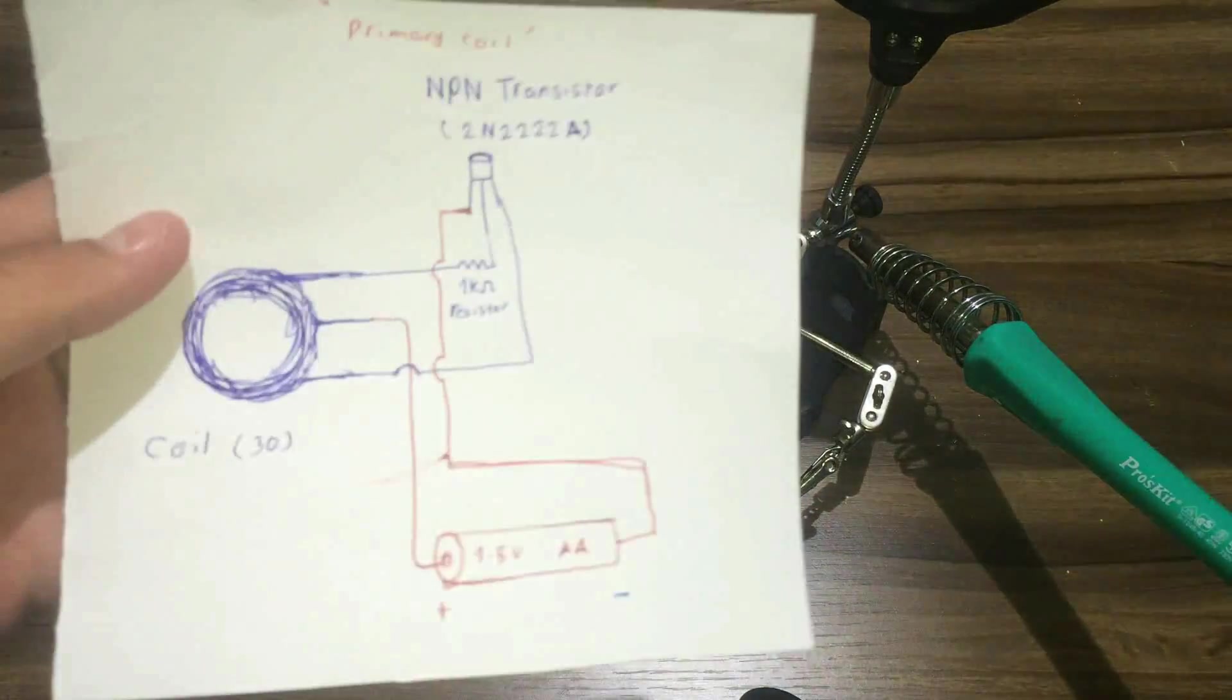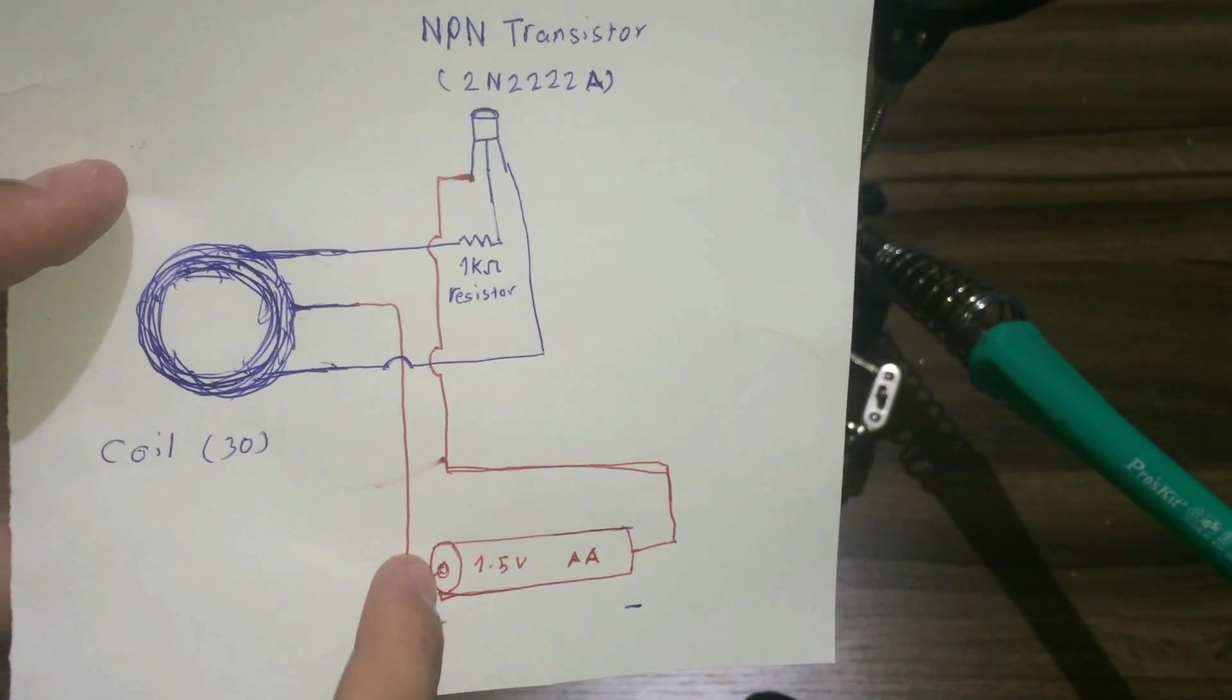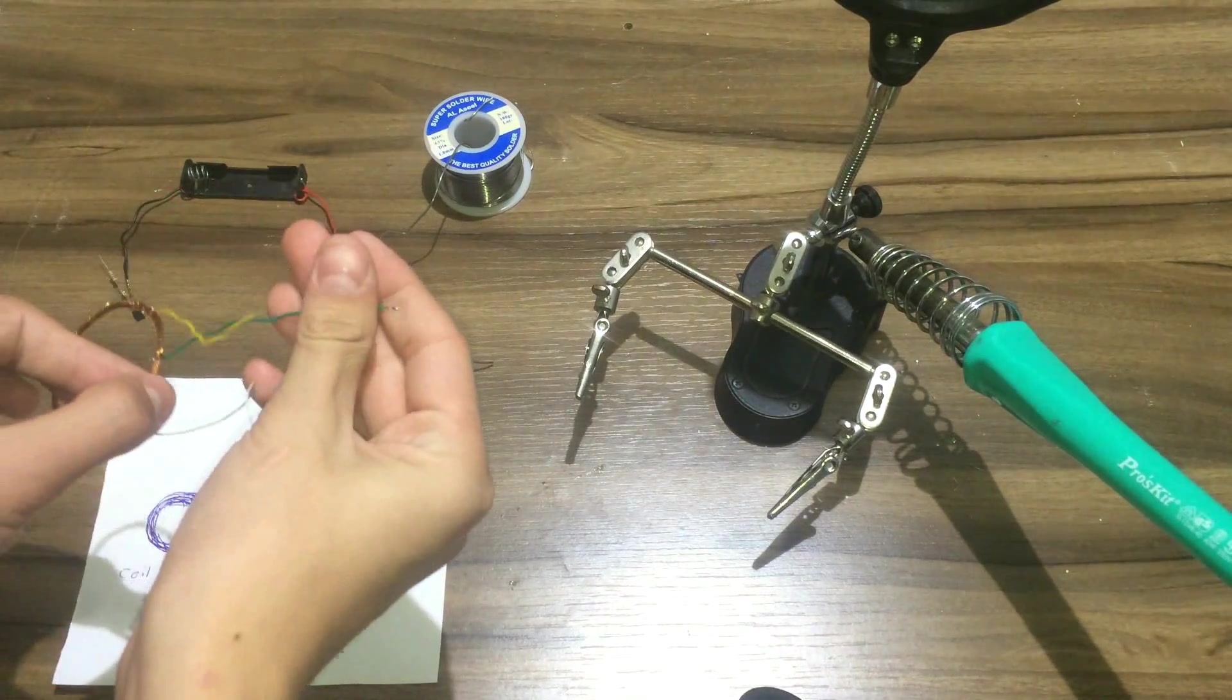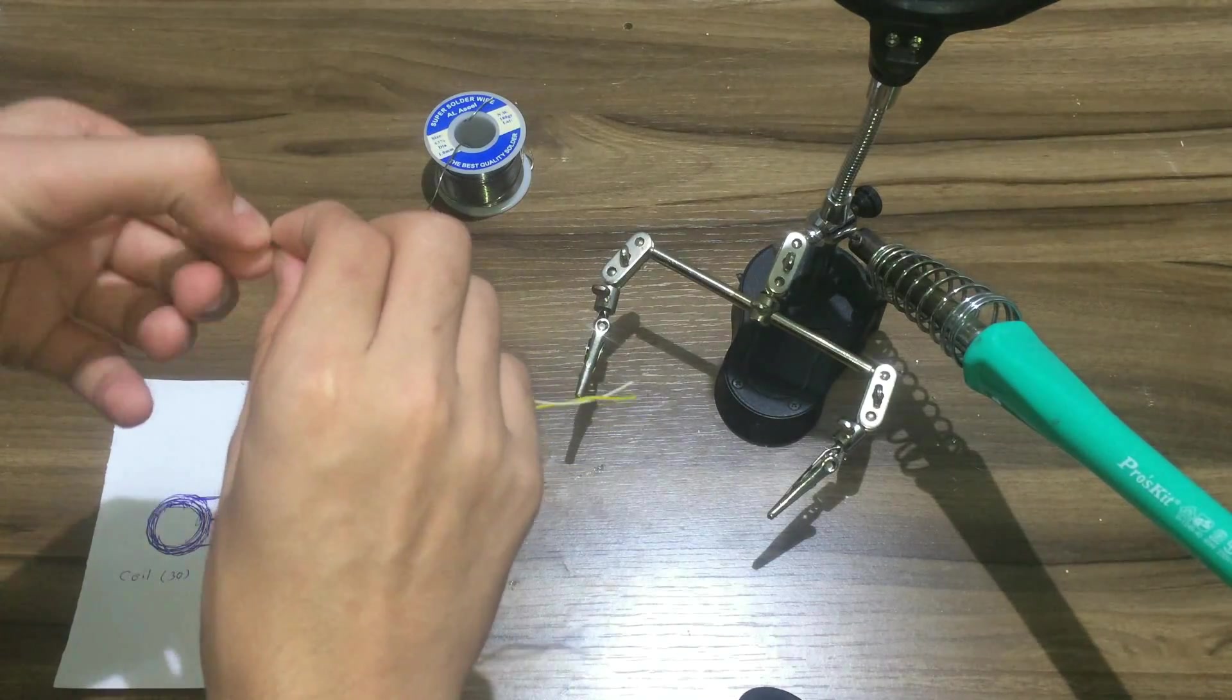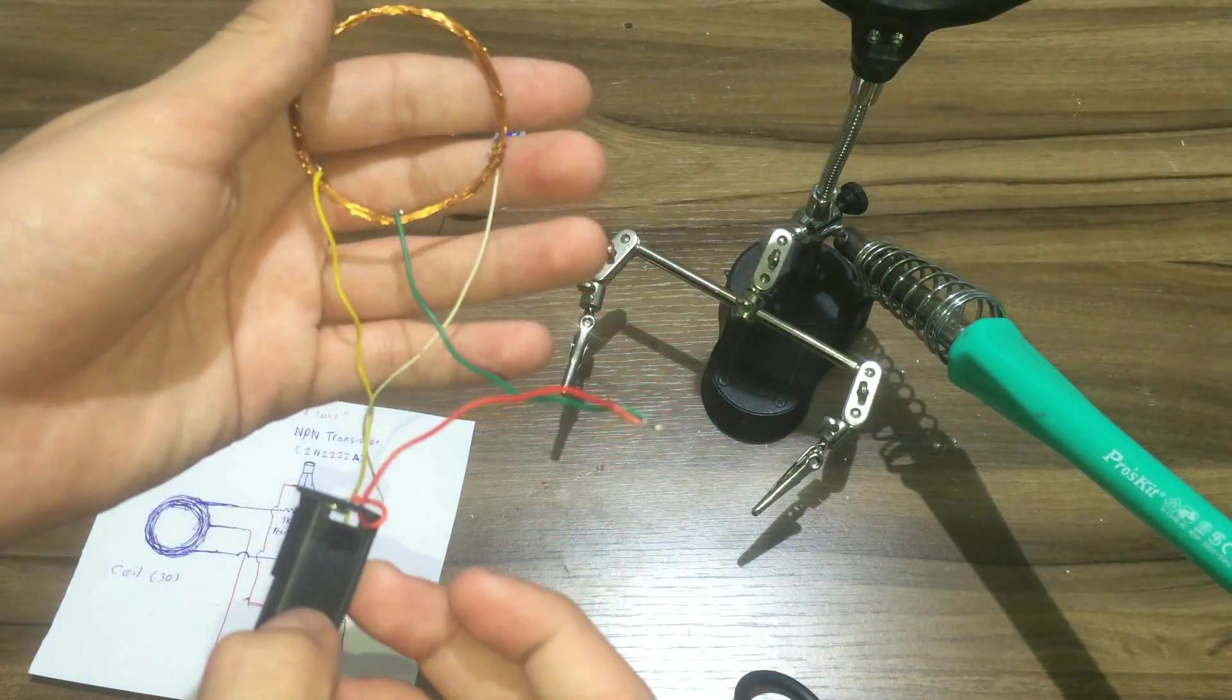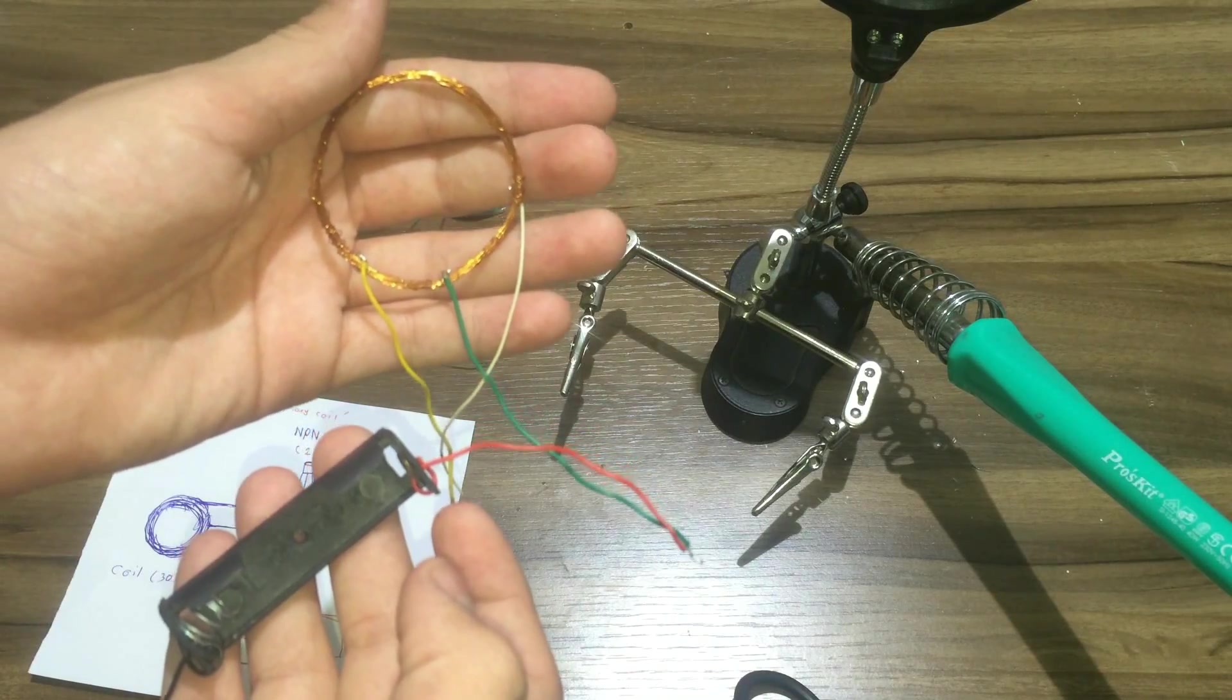Next, I will connect the middle pin of the coil to the positive side of the battery. On the coil, it is the green wire. I will connect it to the positive side of the battery. Now, as you can see, the positive side of the battery is connected to the middle pin of the coil.